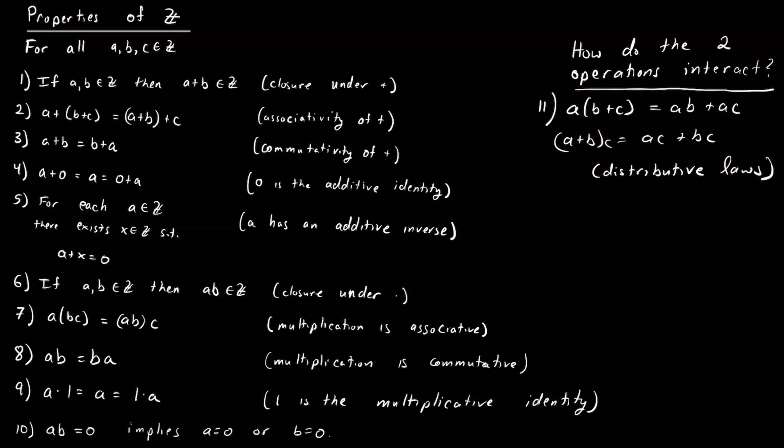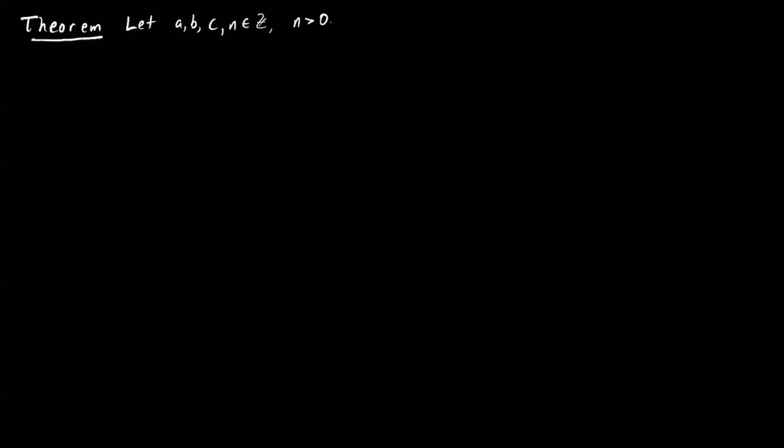Now we'll move on to Z mod n and talk about which properties of Z it also satisfies. Not all the listed properties are going to carry over to Z mod n, so we'd like to explore which ones actually do. We'll go through the list and prove a few of them, leaving the rest as exercises since the proofs are all pretty similar.